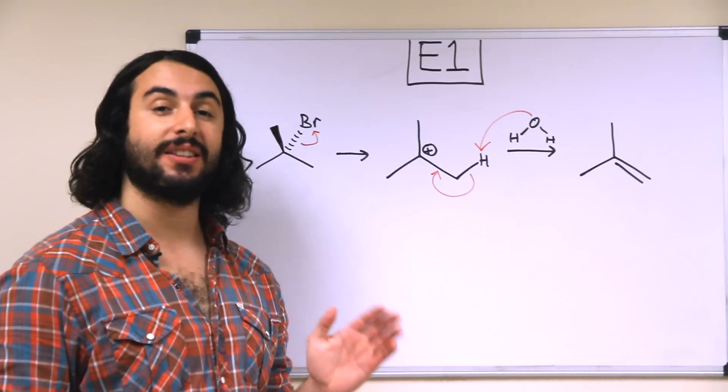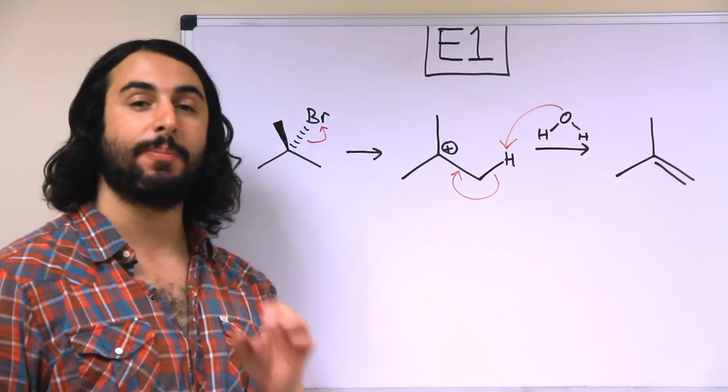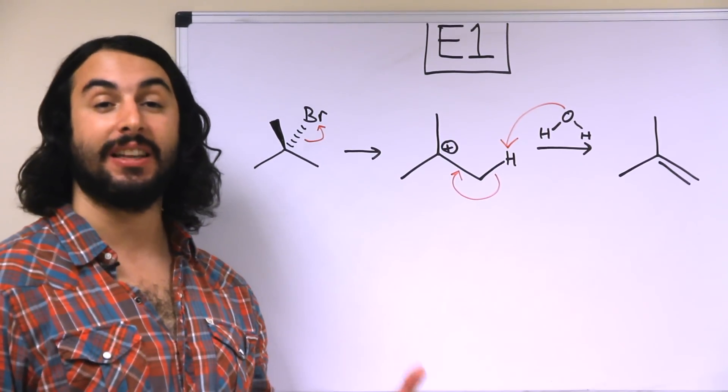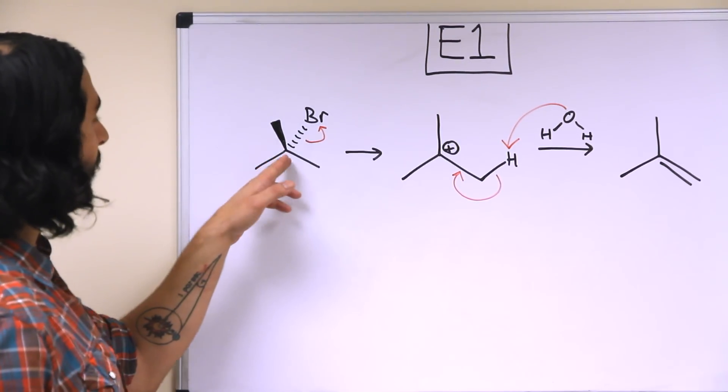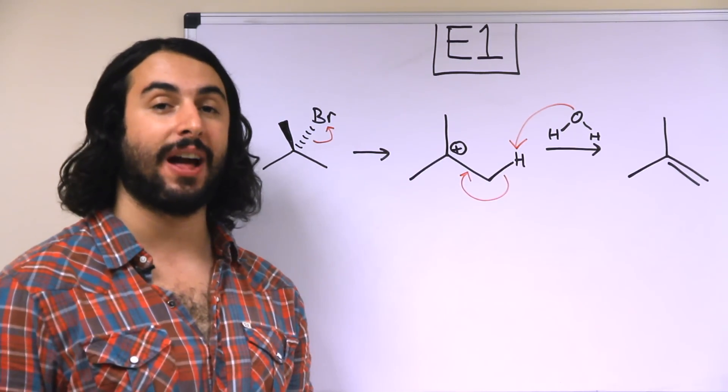So just like with the SN2, sorry just like for the SN1, the first step in the E1 reaction is that the leaving group leaves. So let's take a look at this substrate here. The bromine is going to leave, that leaves a tertiary carbocation.